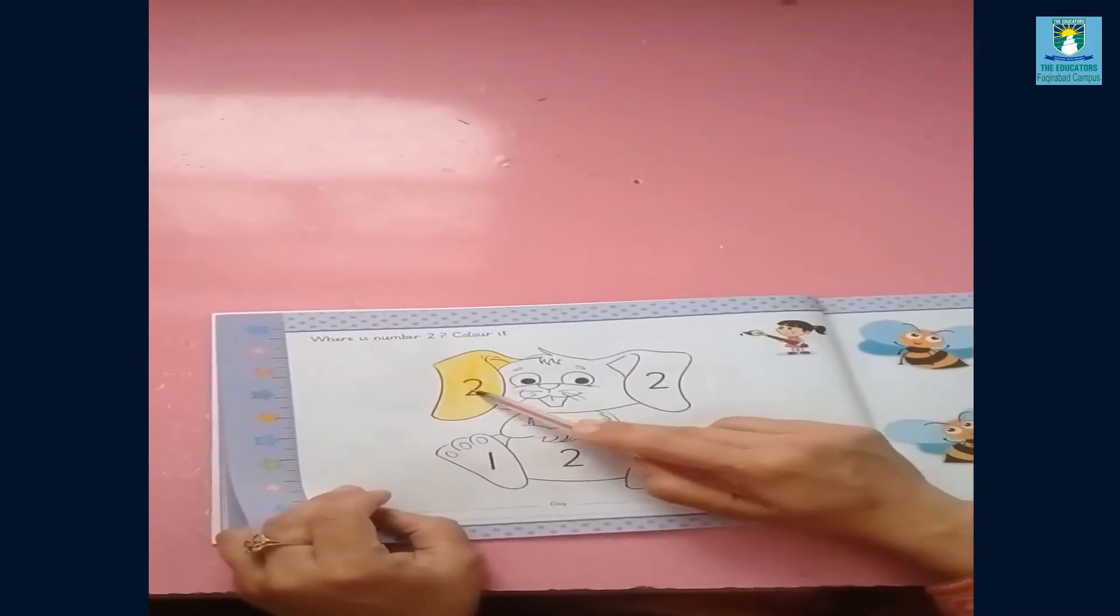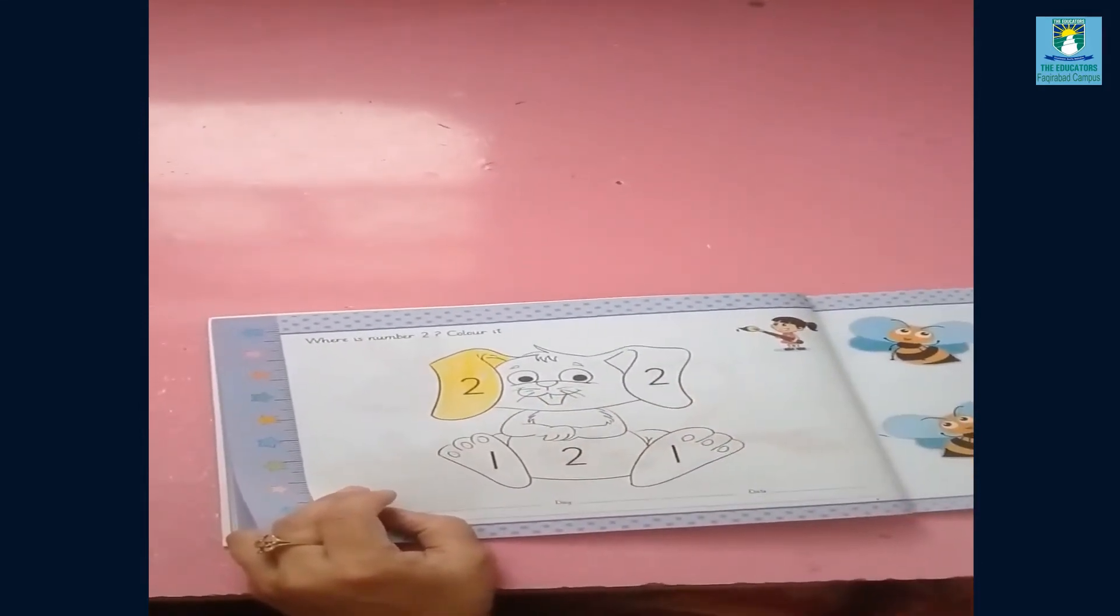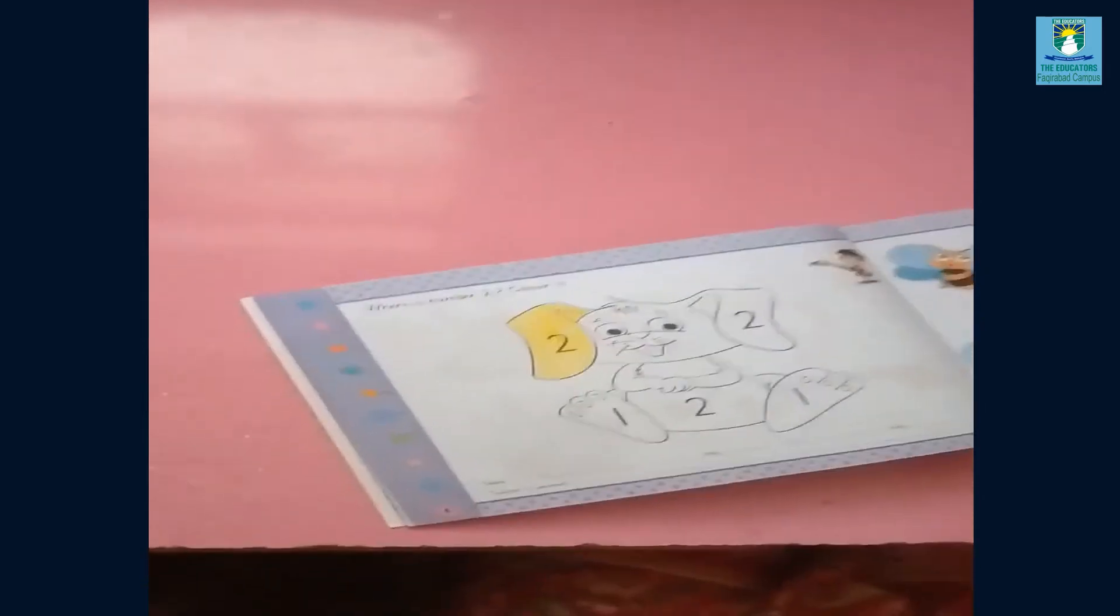This is a picture of rabbit. What you will do? You will find the number two and then color it. Now I'm starting the coloring on number two.